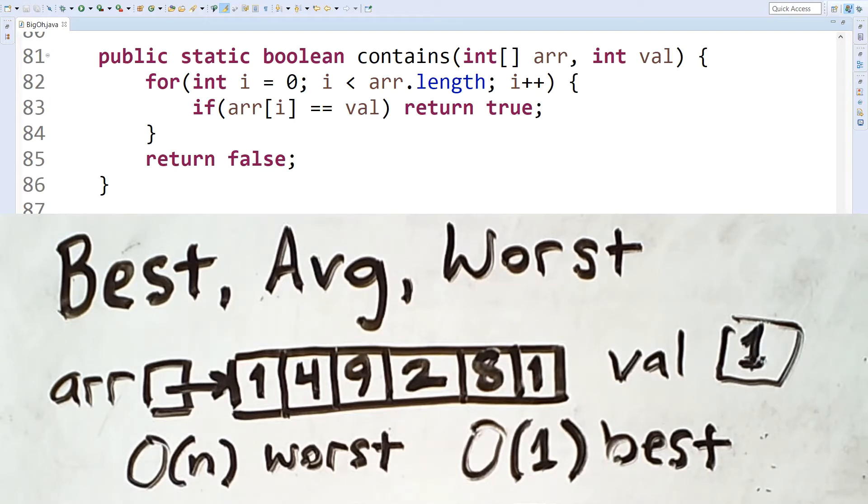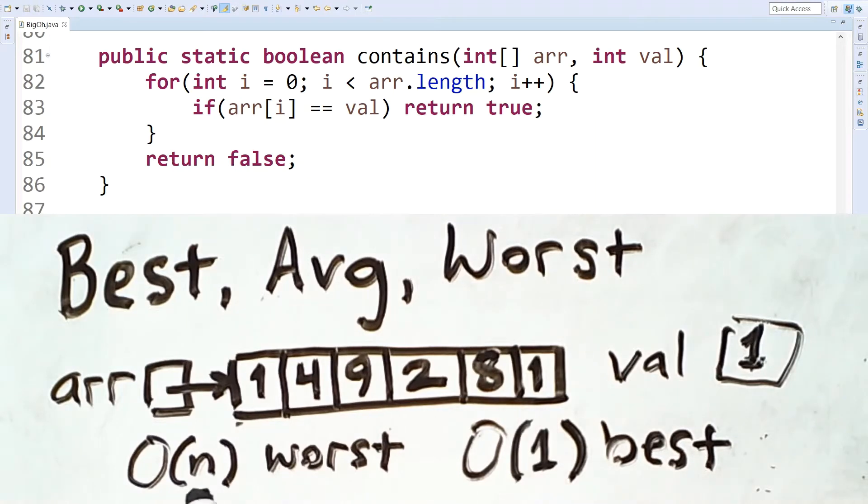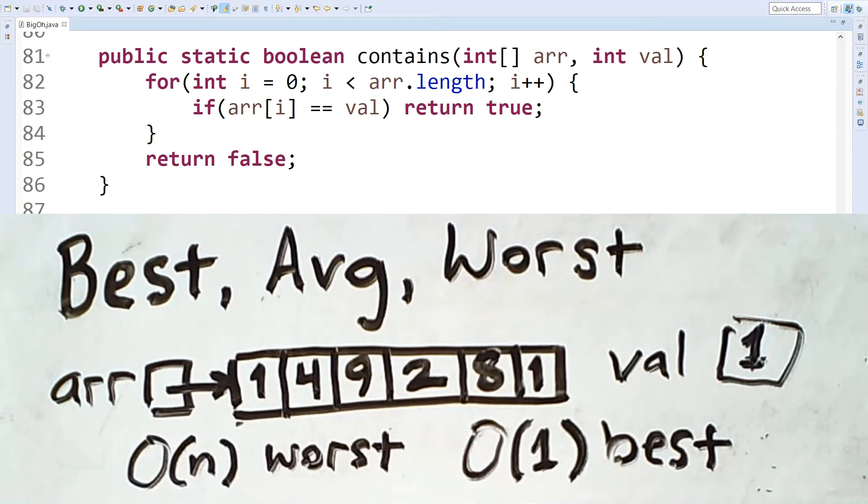But the important takeaway here is that the array had the same size. And we're considering the length of the array to be our N. So N, the length of the array, is the size of the input. But sometimes we search through the whole thing, and sometimes we only check the first value.